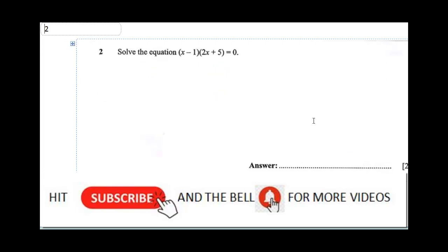The second question says solve the equation. When you have an equation (x - 1)(2x + 5) = 0, already looking at this equation, it's been simplified. So it's either you say x - 1 = 0 or you say 2x + 5 = 0.